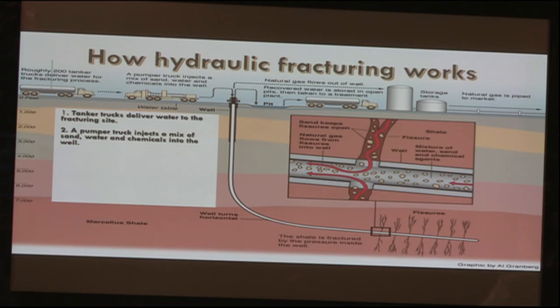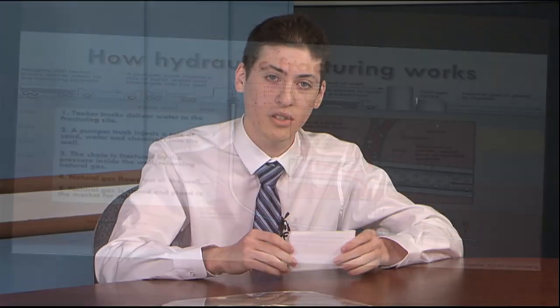Hydraulic fracturing is a step-by-step process. First, tanker trucks deliver water to the fracturing site. A pumper truck then injects a mixture of water, sand, and chemicals into the well. The shale — a fine-grained sedimentary rock composed of mud, clay materials, and tiny fragments — is fractured by pressure inside the well, releasing natural gas and oil. After the natural gas and oil is withdrawn, it flows out of the well and is then stored and piped to the market.